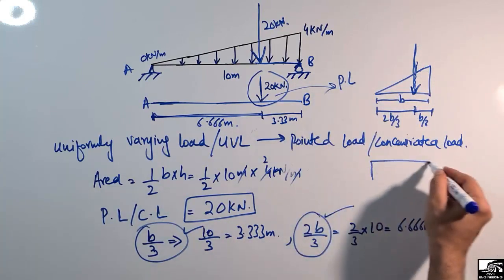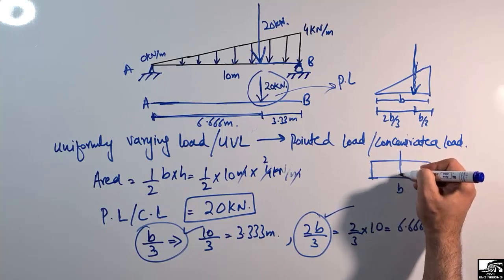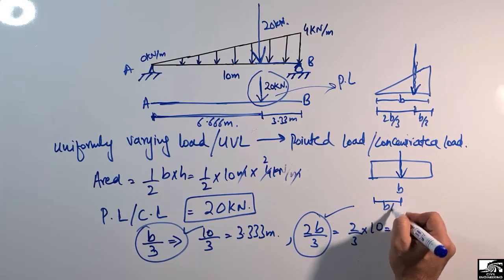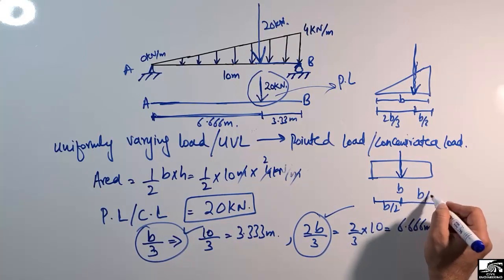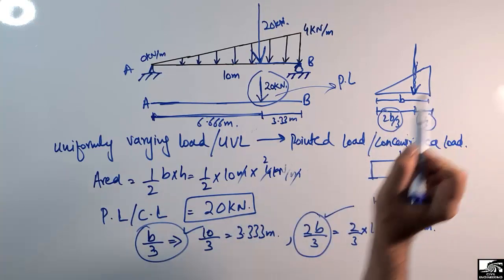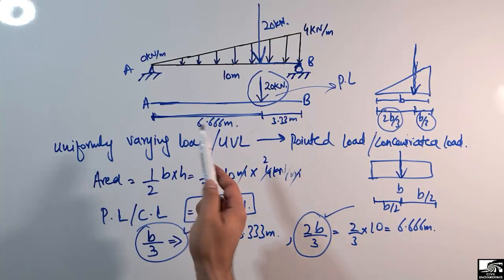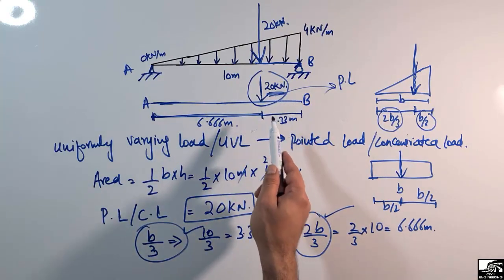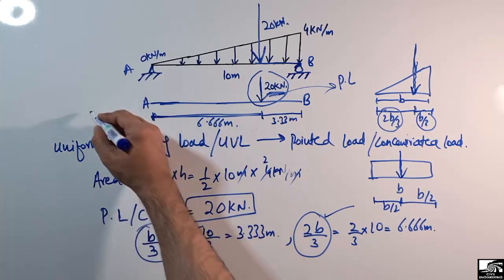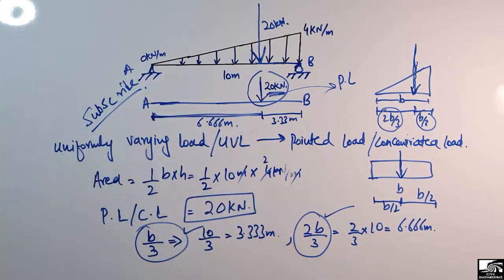For comparison, in a rectangle the centroid is at the midpoint, so it's b/2 from each side. But for a triangle, it is 2b/3 from one end and b/3 from the other. This is the method to convert a uniformly varying load into a concentrated load and find where it acts. Hope you guys understood — don't forget to subscribe to our channel. Thank you for watching.